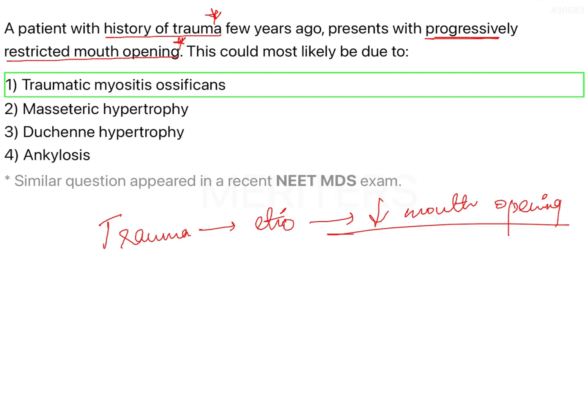The key differentiator between traumatic myositis ossificans and ankylosis is that ankylosis mainly occurs at a fracture site where the condyle is broken. In ankylosis there is complete inability to open the mouth. In traumatic myositis ossificans the transcript specifies progressively restricted mouth opening, not complete closure. If it were recent trauma with complete inability to open within three to four months, that would point more toward ankylosis.